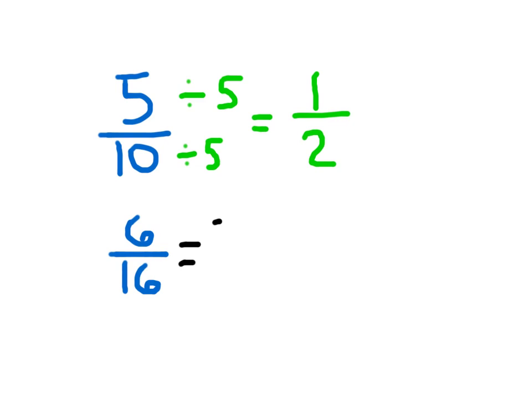Now with 6/16, I see right away that those are both even numbers, and I know that even numbers are both divisible by 2. So I can start there. 6 divided by 2 is 3, and 16 divided by 2 is 8, giving me 3/8.